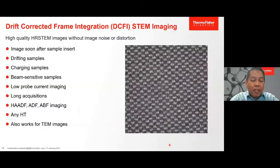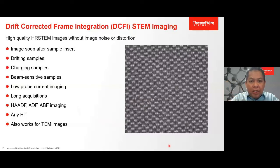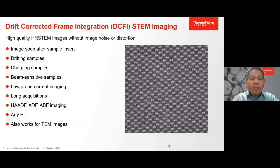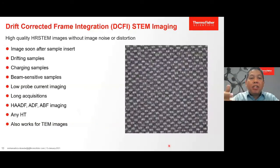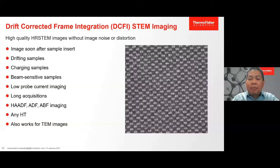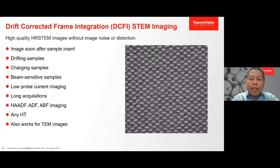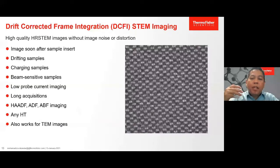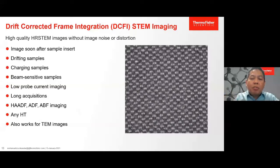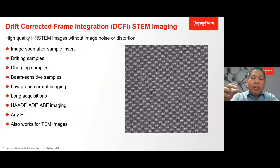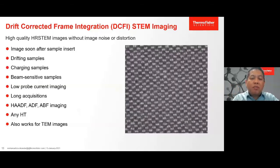We can see in a movie both noise and drift distortions. To address distortions we can increase acquisition time or reduce scan times, but the signal-to-noise problem remains. Therefore, we need to use algorithms to solve this problem. We use what we call the corrected frame integration function, which can be found in software like the Velox user interface. For Thermo Fisher microscope owners, this technique is also built into operating systems such as TIA, but Velox provides a better algorithm.